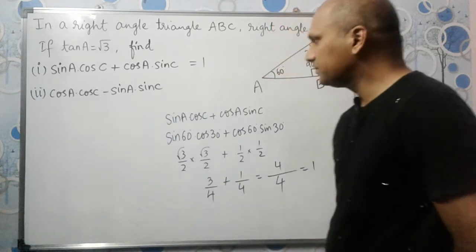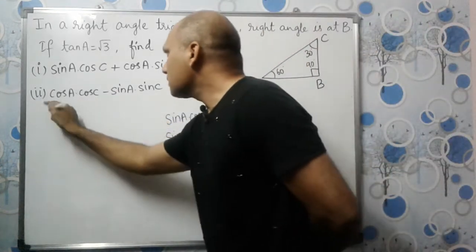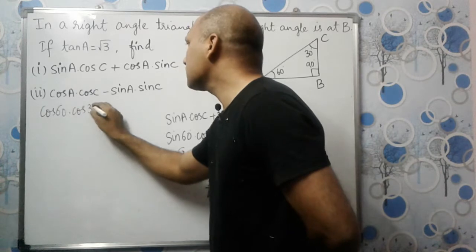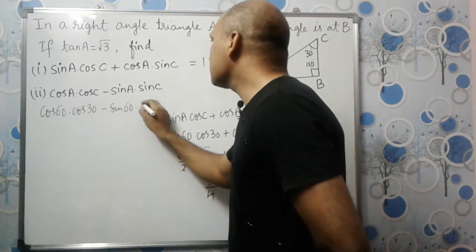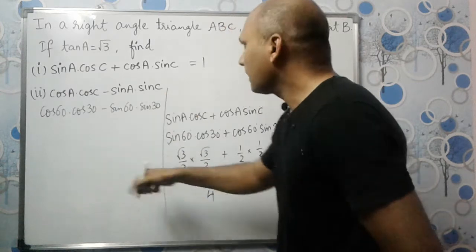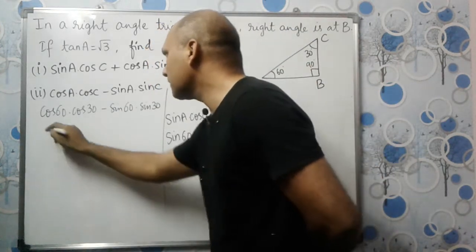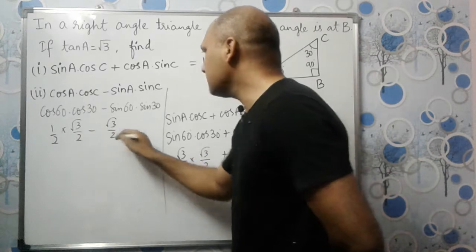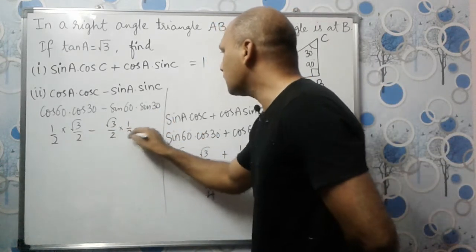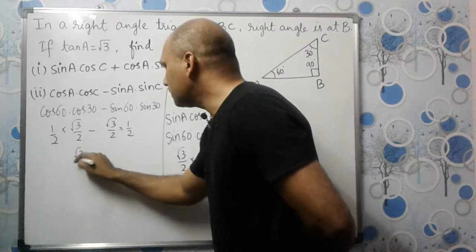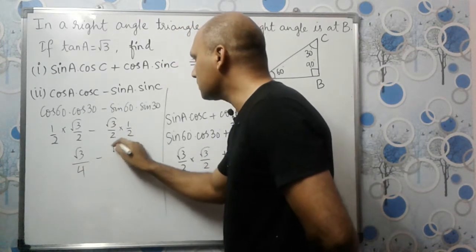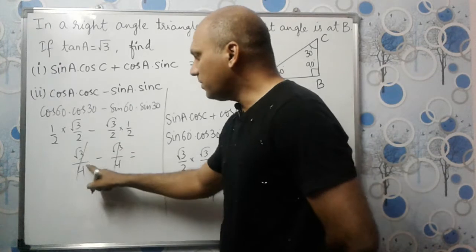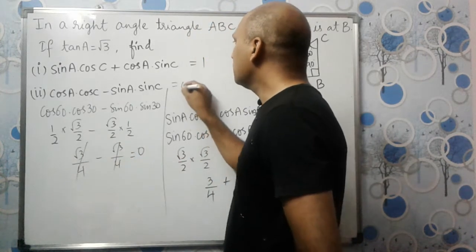For the second expression, cos A cos C minus sin A sin C: cos 60° times cos 30° minus sin 60° times sin 30°. This gives (1/2)(√3/2) minus (√3/2)(1/2), which is √3/4 minus √3/4, which equals 0.